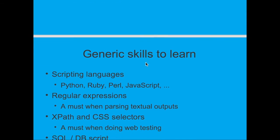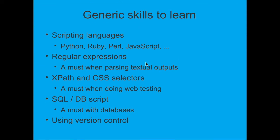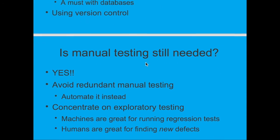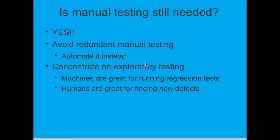Now we come to the topic of generic skills an automation tester should have. These include scripting languages like Python, Ruby, Perl, and JavaScript; regular expressions, which are a must when parsing textual outputs; XPath and CSS selectors, a must for web testing; SQL and database scripting for database-related testing; and use of version control systems, which are mostly similar — knowing one makes learning another straightforward.